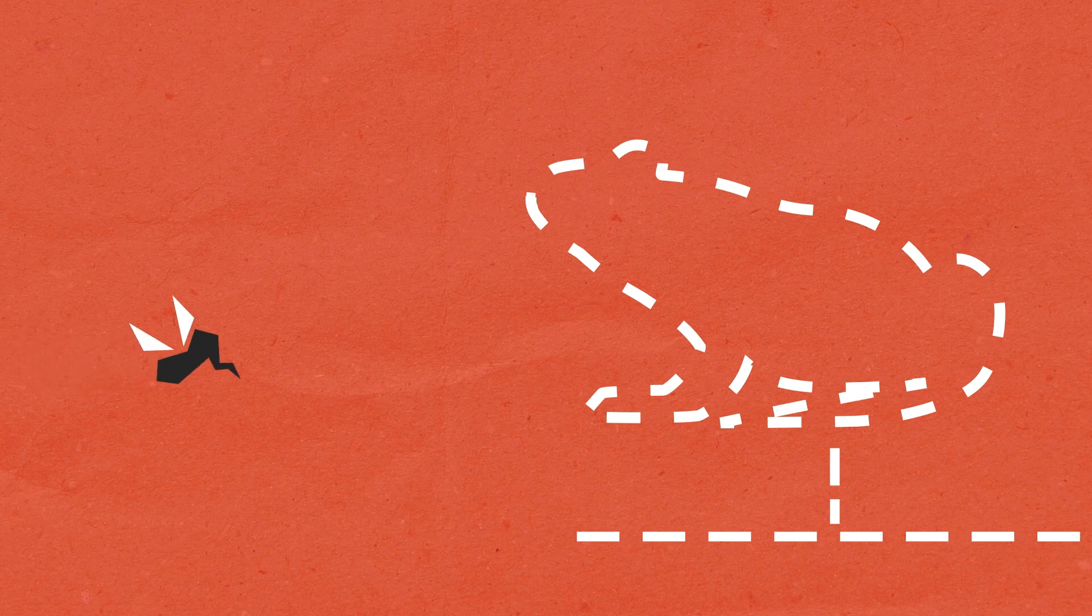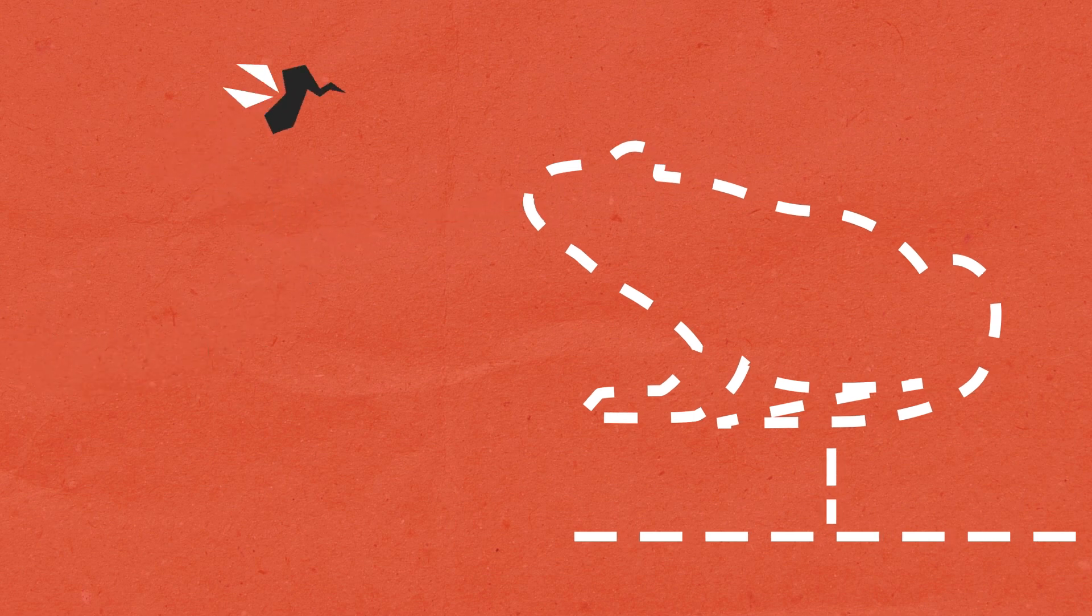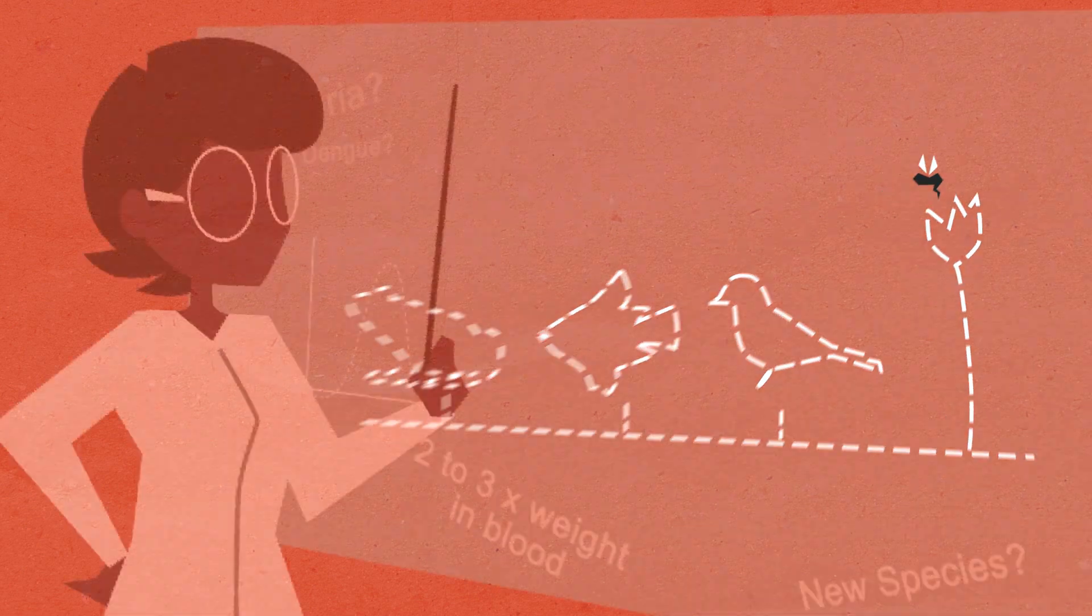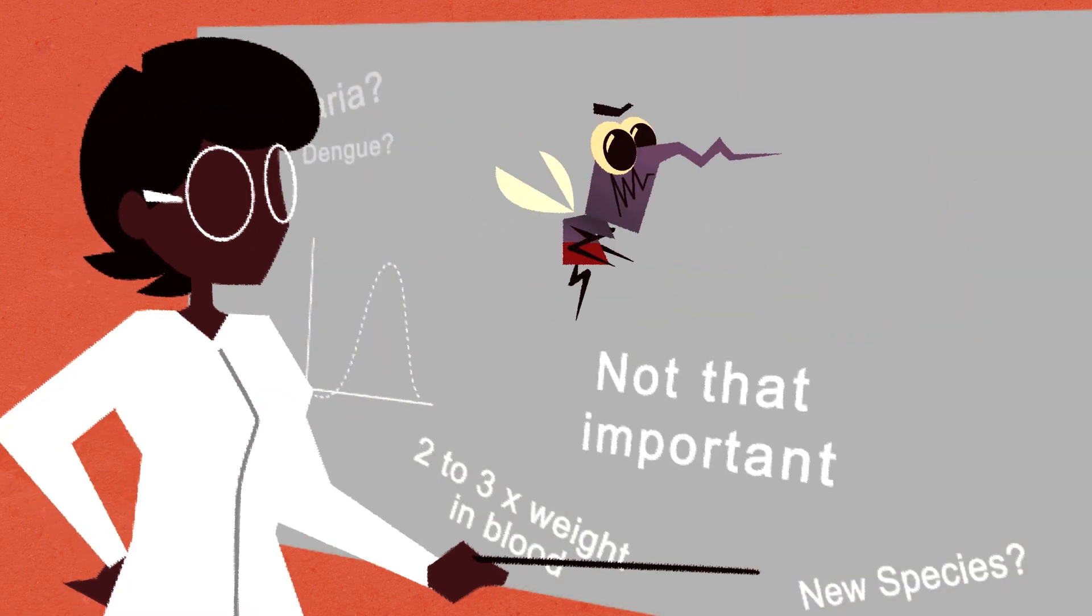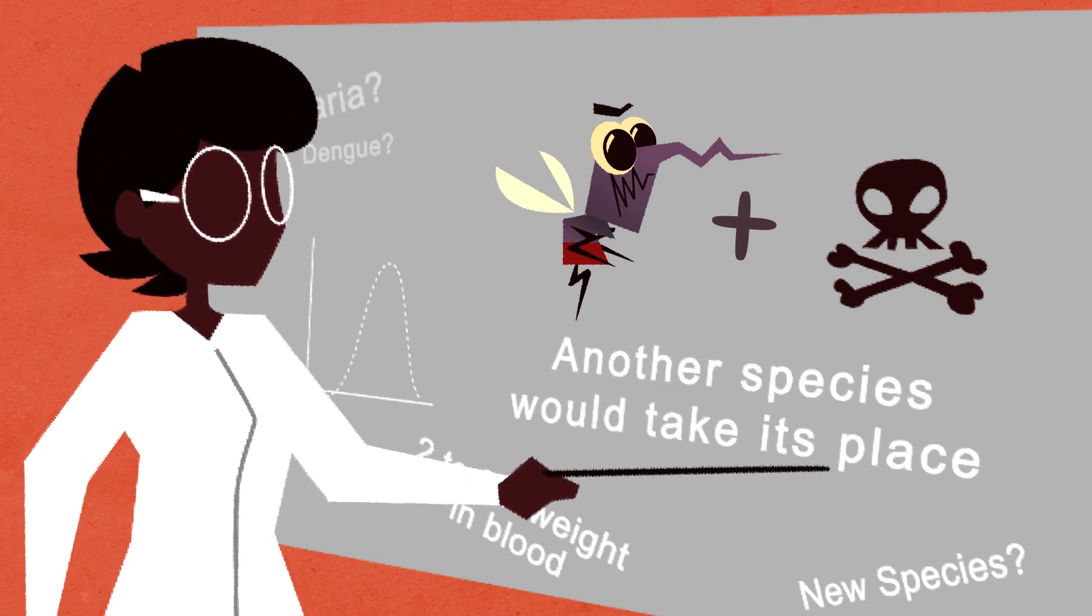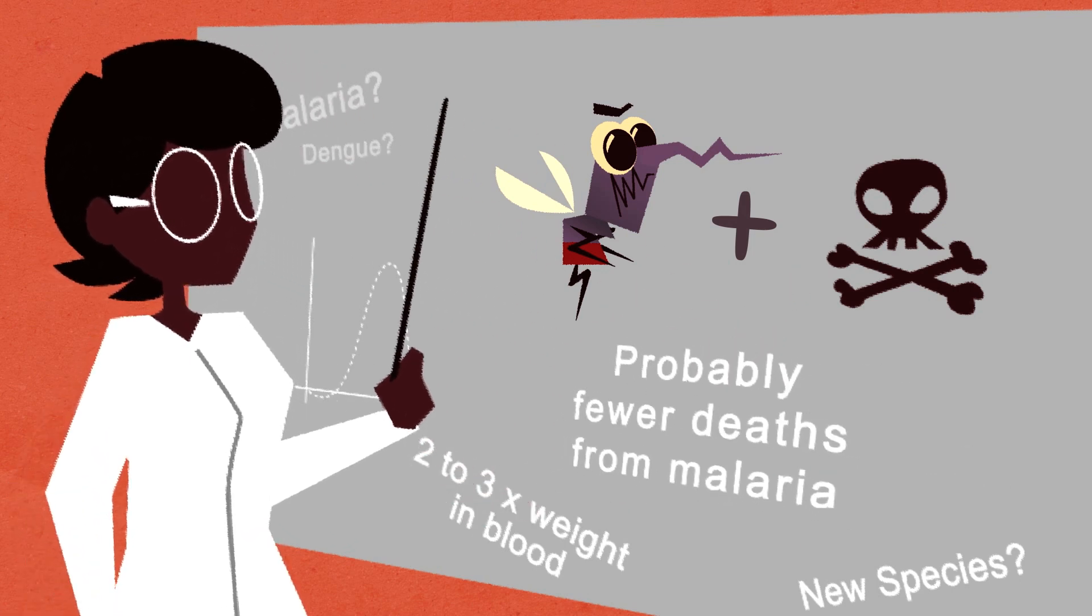Getting rid of the mosquito removes a food source for lots of organisms, like frogs and fish and birds. Without them, plants would lose a pollinator. But some scientists say that mosquitoes aren't actually all that important. If we got rid of them, they argue, another species would simply take their place, and we'd probably have far fewer deaths from malaria.